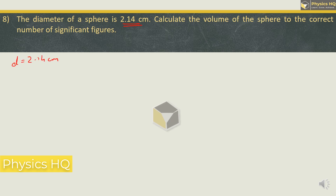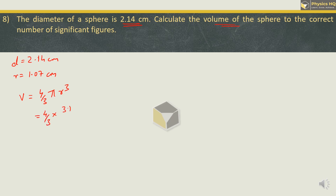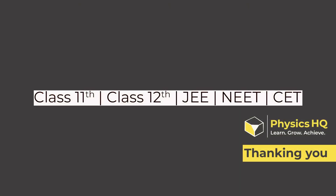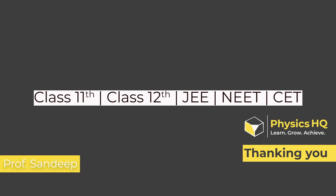The diameter of a sphere is 2.14 cm, so the radius is 1.07 cm. Calculate the volume to the correct number of significant figures. Volume = (4/3)πr³ = (4/3) × 3.142 × (1.07)³. Solving this with a log book gives 5.13 cm³. Thank you for your time. If you are finding this lecture series useful, please click the like button and share with your friends. Based on your feedback we will be covering key concepts in our five-minute lecture series of class 11th. This is Professor Sandeep from Physics HQ, signing off.